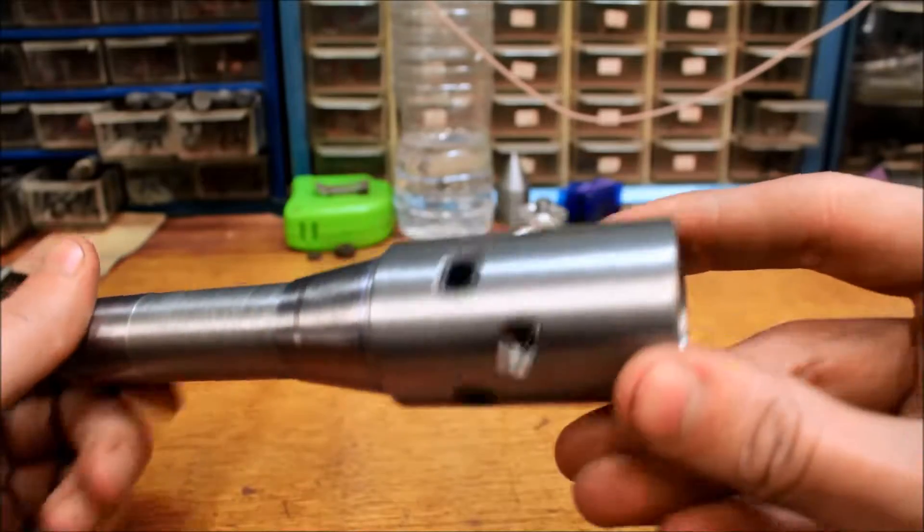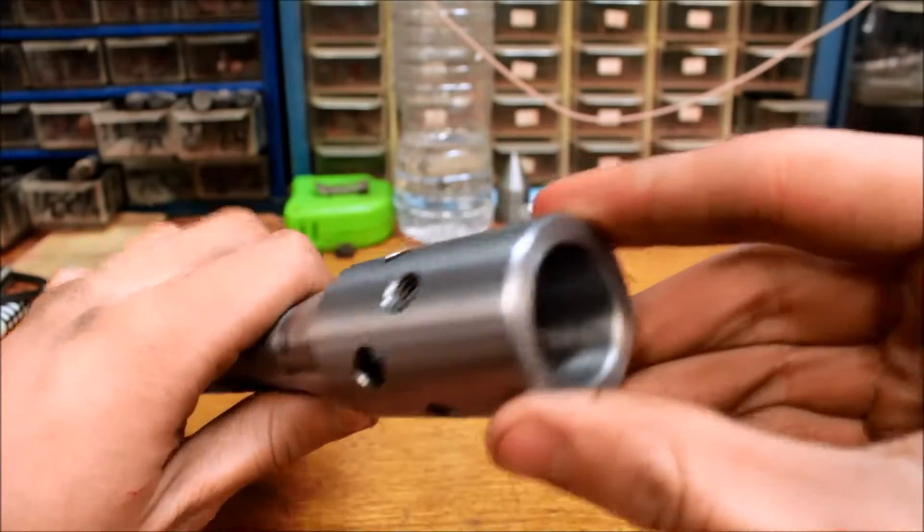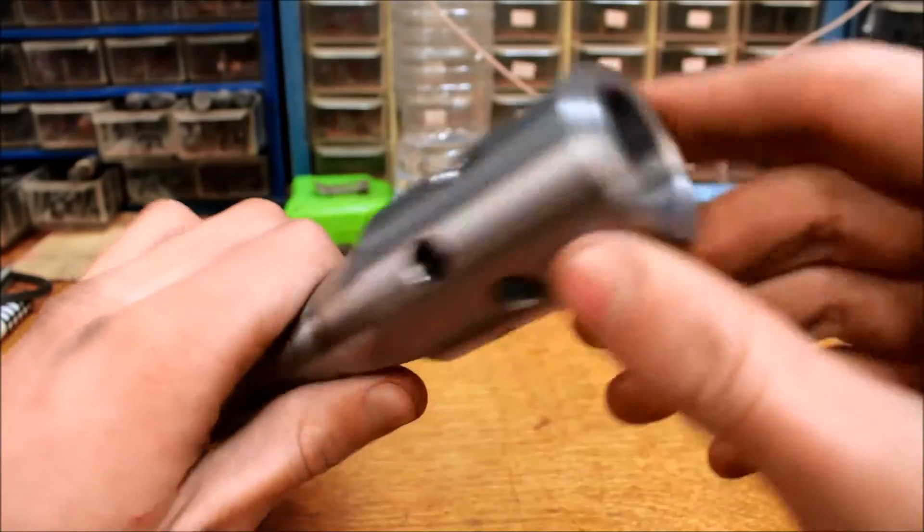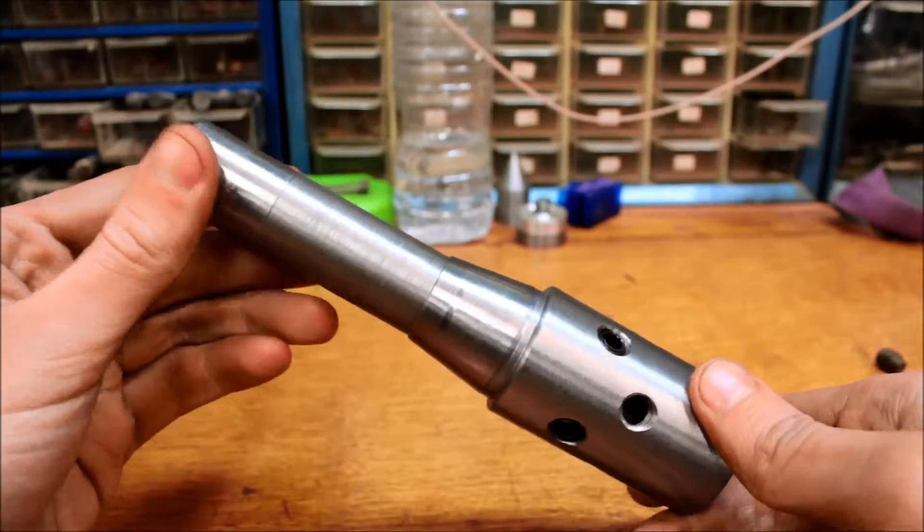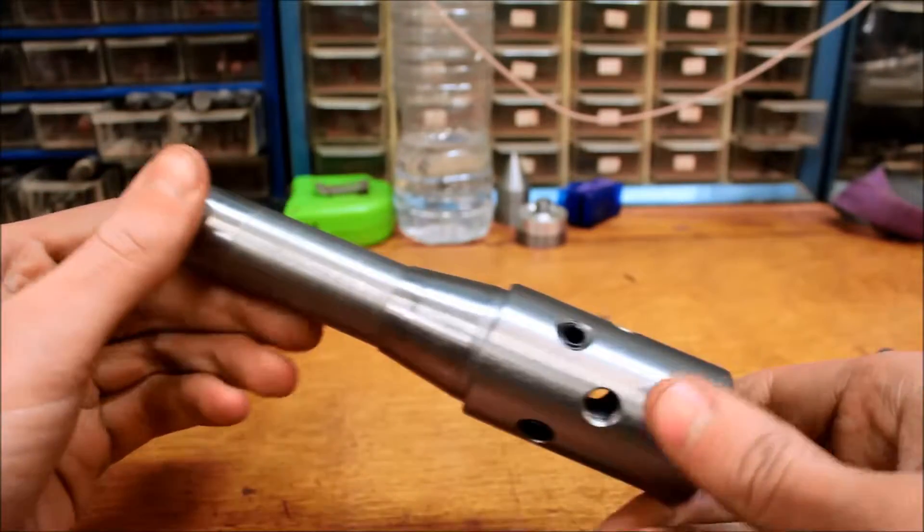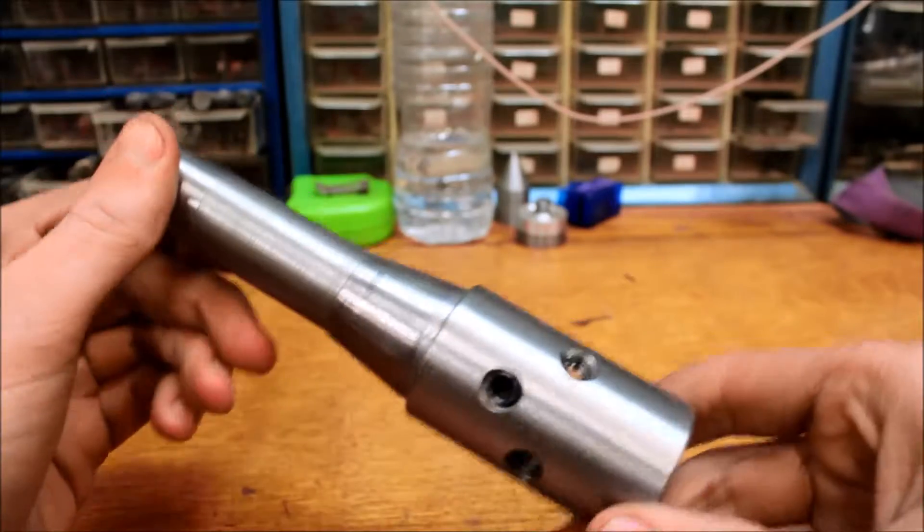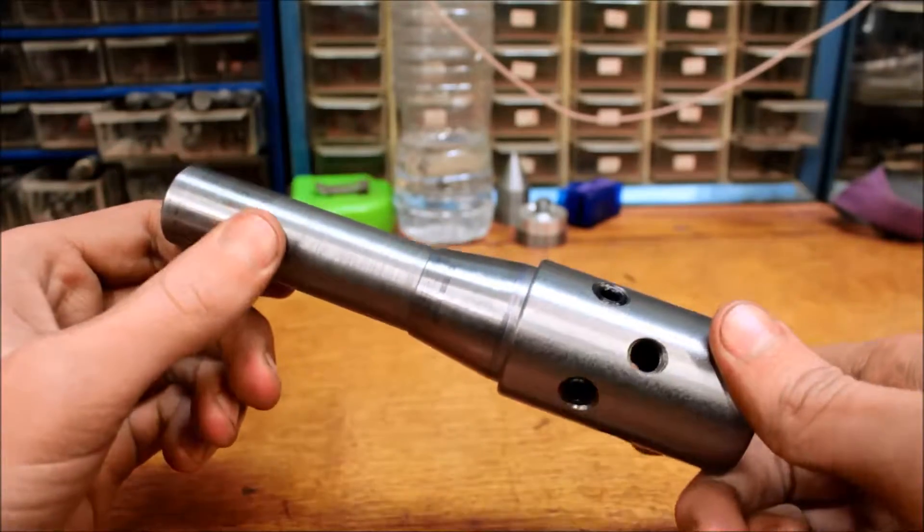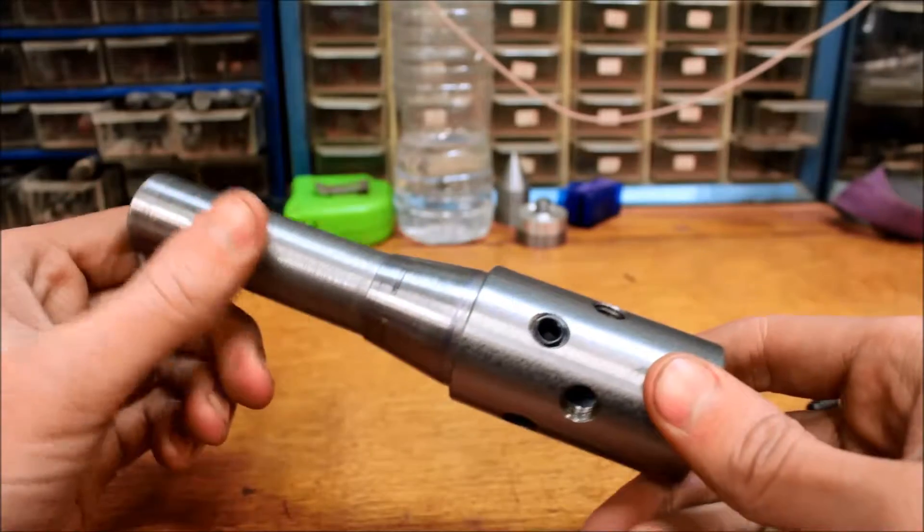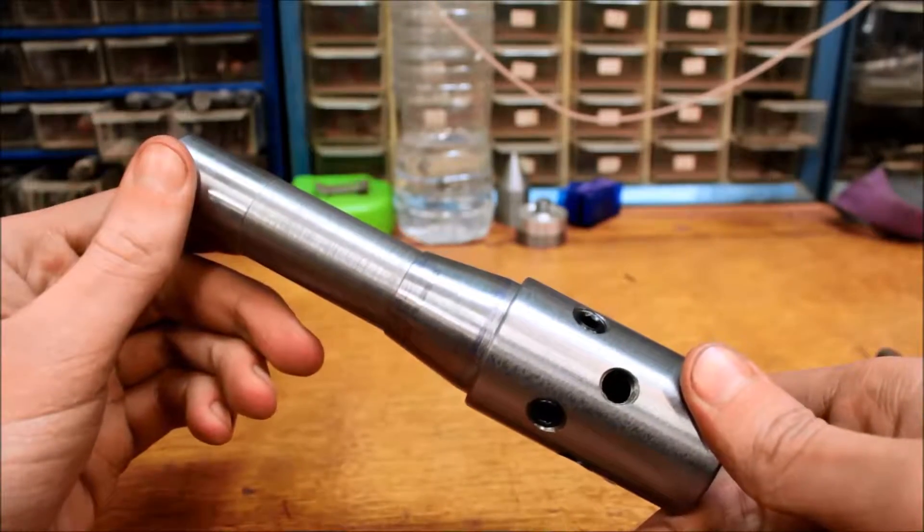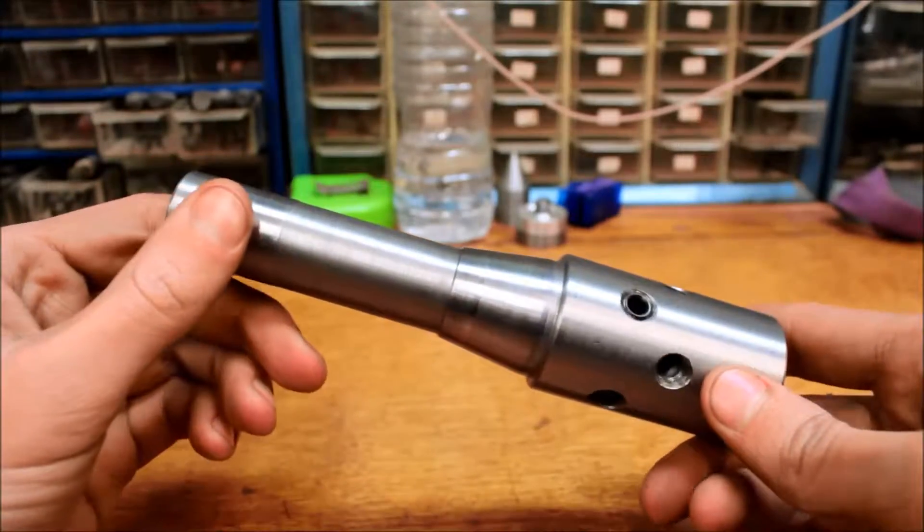This is just a pretty simple homemade driver to drive larger taps than your Jacobs Chuck will typically want to grab. I designed this one for taps over half inch, so nine sixteenths up to whatever will fit. Currently the largest I have is a one and one eighth, and it's pretty simple to build.